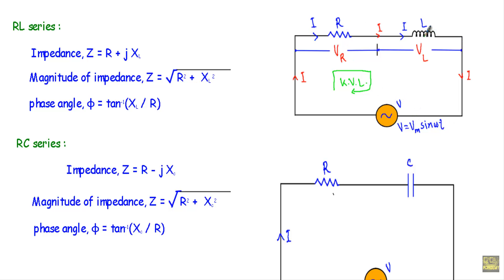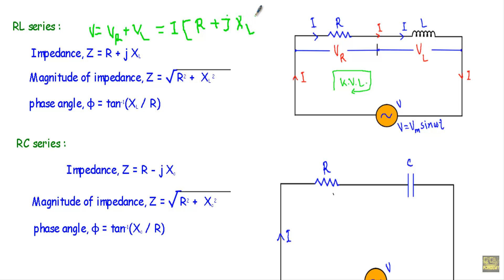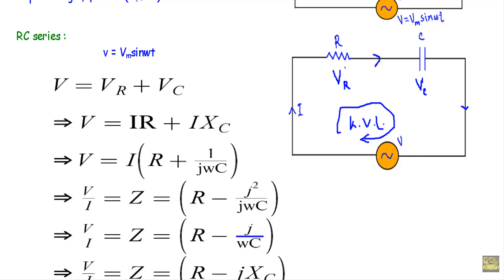In the RL series circuit, alternating current I flows and applied voltage is V, with R and L connected in series. Applying KVL: V equals VR plus VL. Taking I common, V equals I(R + jXL). Therefore the impedance Z equals V/I equals R + jXL. The magnitude is √(R² + XL²) and the phase angle is tan⁻¹(XL/R).